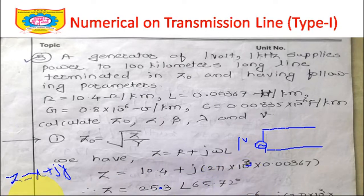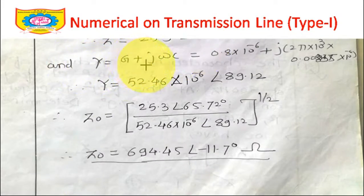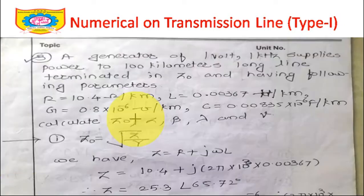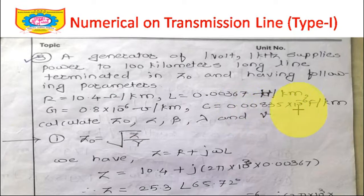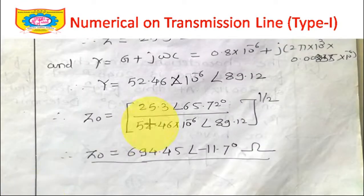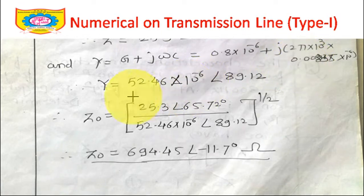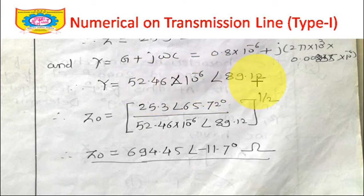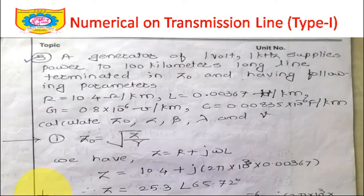Next, calculate Y = G + jωC. Substituting G = 0.8 × 10⁻⁶ and C = 0.00835 × 10⁻⁶ with ω = 2π × 10³, you get a value in rectangular form. Convert it to polar form. The result is Y = 52.46 × 10⁻⁶ ∠89.12°. Now we have both Z and Y.